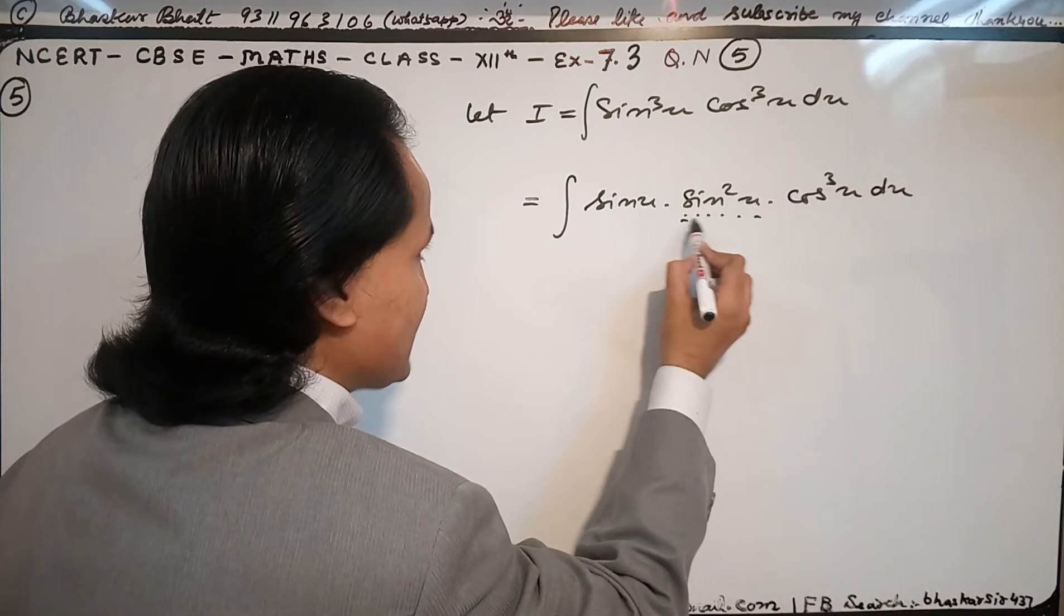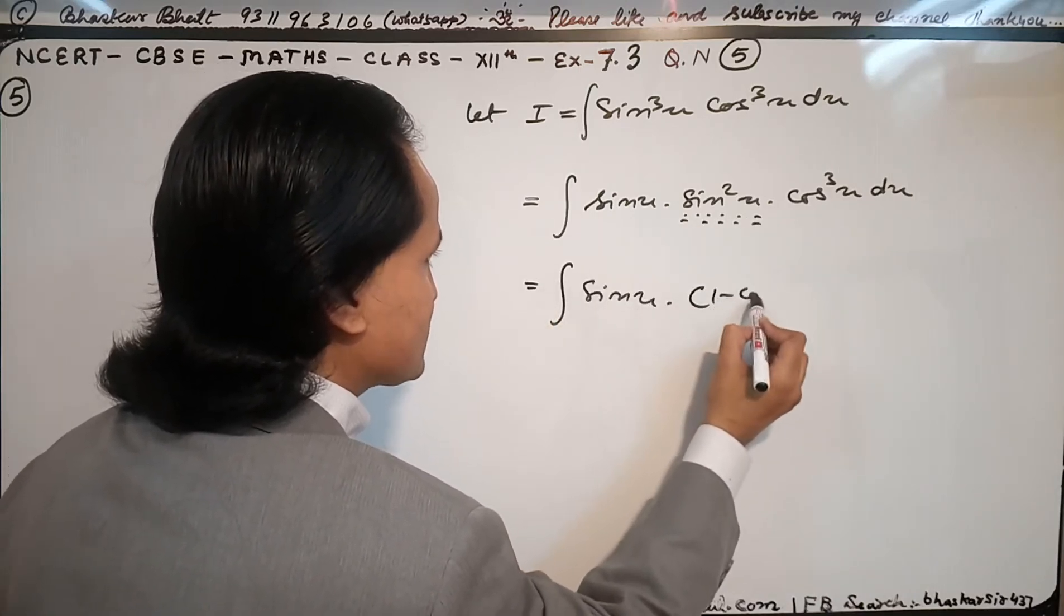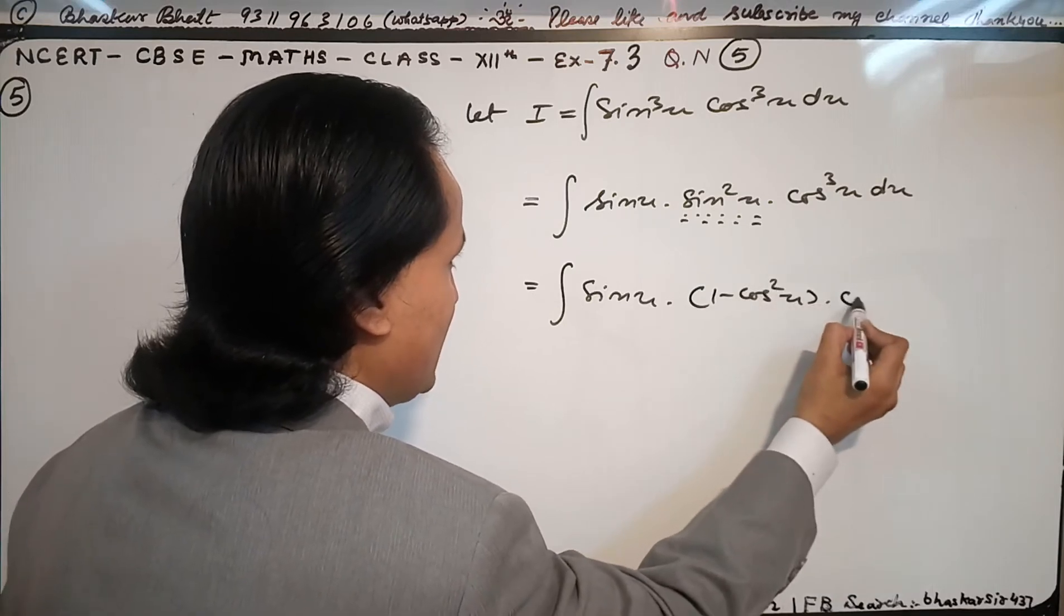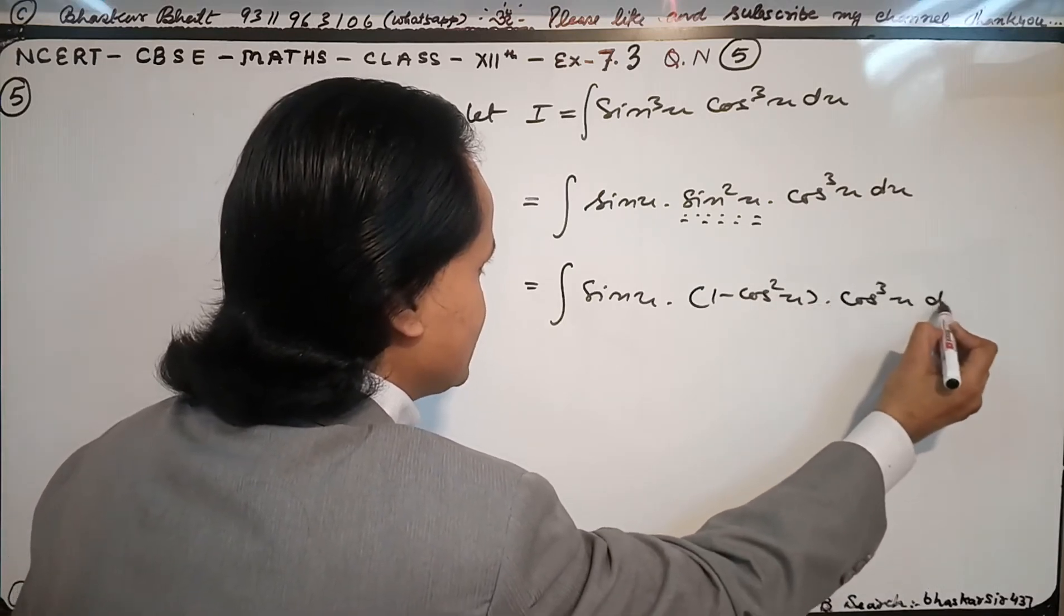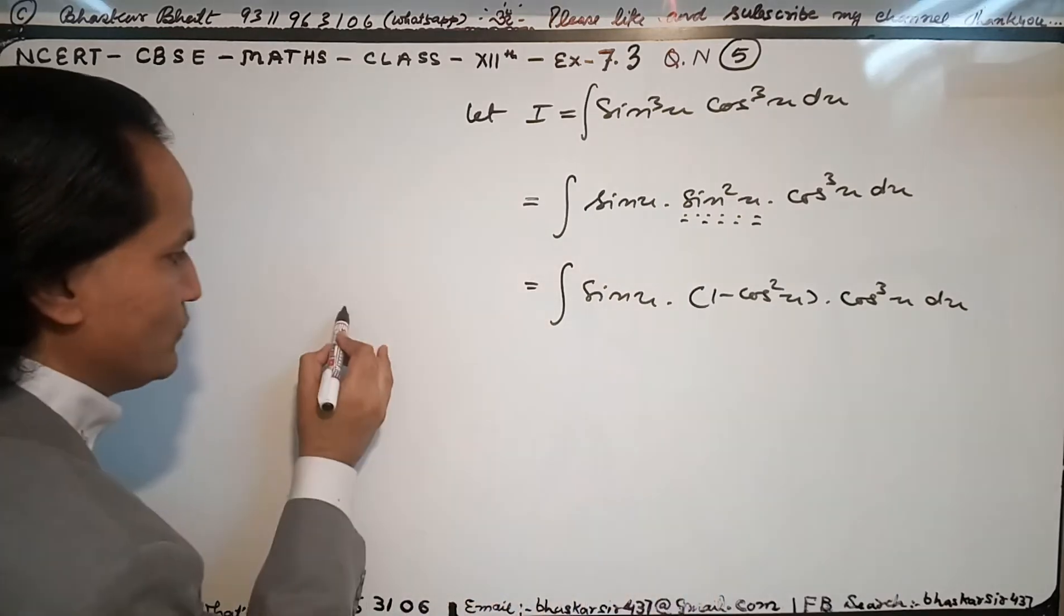You know I can write sine square x as 1 minus cos square x. So sine x times 1 minus cos square x and cos cube x dx. Now my dear friend, I will put cos x equal to t.